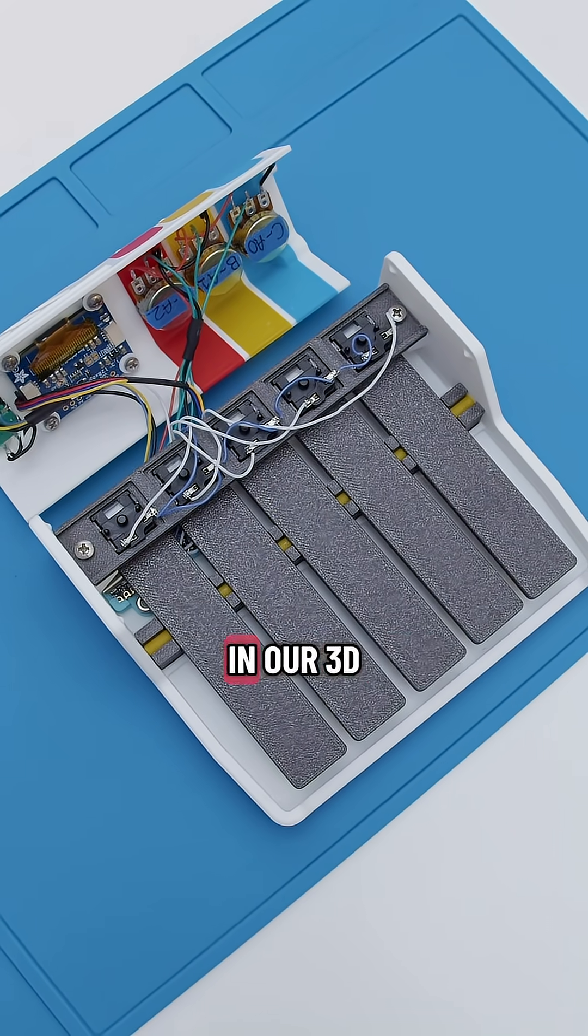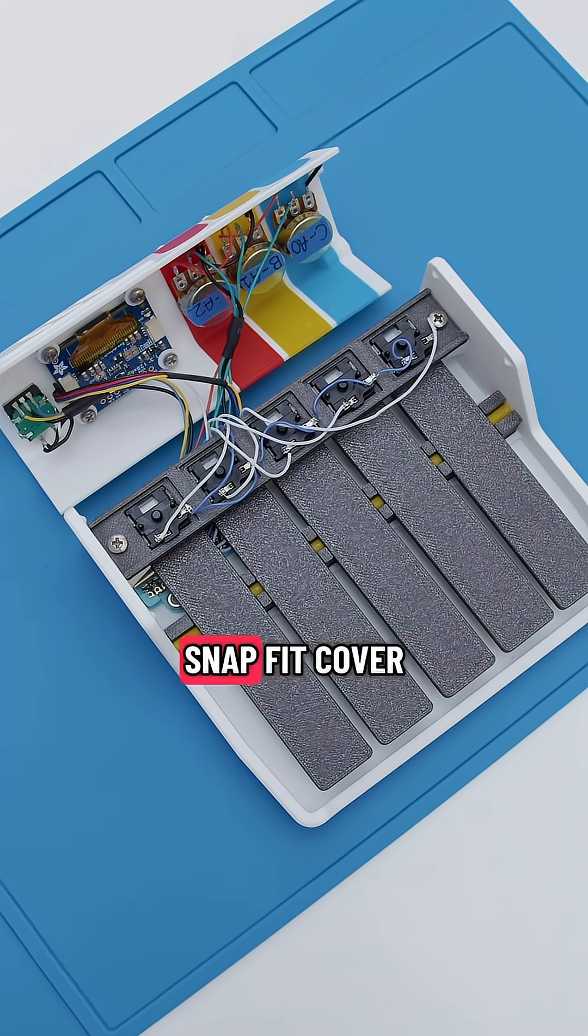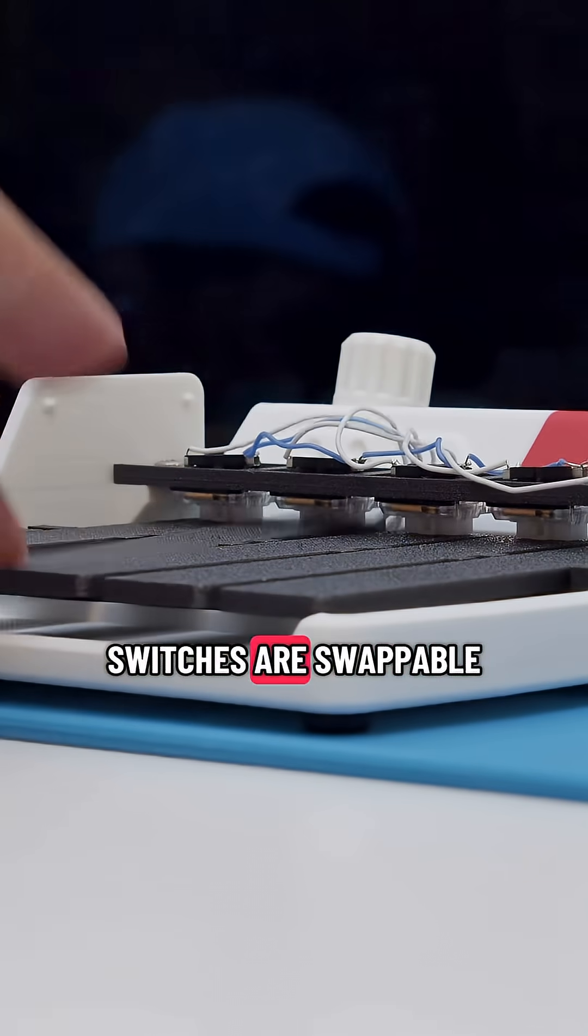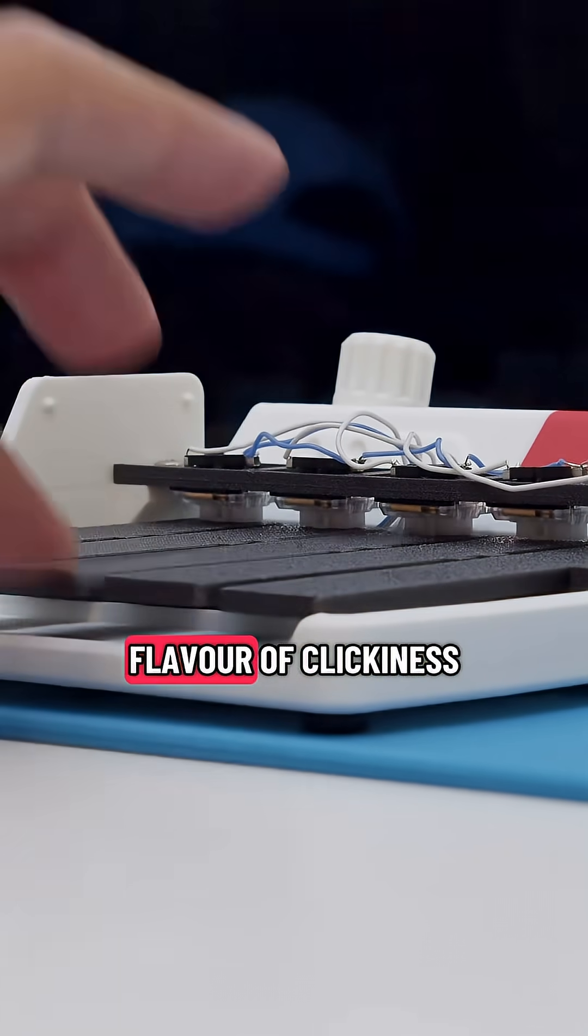All of the electronics are housed in our 3D printed enclosure that features a snap-fit cover for easy access to the components. The Kailh key switches are swappable, so you can choose your favorite flavor of clickiness.